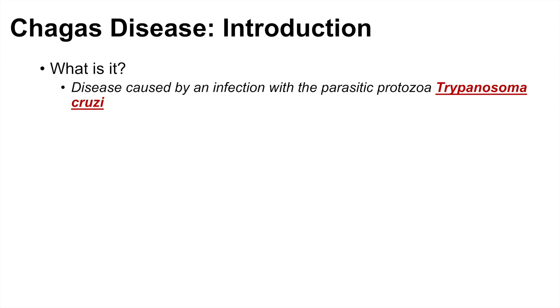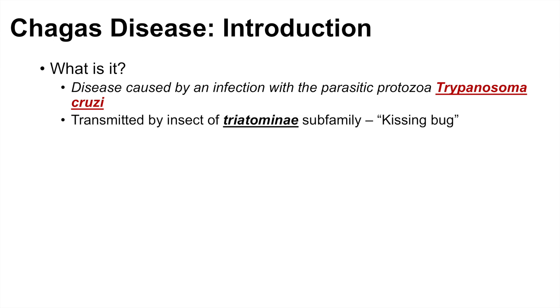Chagas disease is a disease caused by an infection with a parasitic protozoa known as Trypanosoma cruzi. The Trypanosoma cruzi protozoa is transmitted by an insect of the Triatominae subfamily, and this insect is informally referred to as the kissing bug.